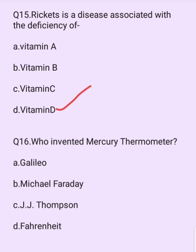Who invented the mercury thermometer? Options are: Galileo, Michael Faraday, J.J. Thompson, Fahrenheit. The answer is option D: Fahrenheit.